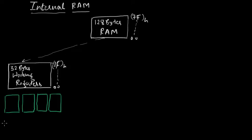This is called Bank 0, this is Bank 1, this is Bank 2, and this is Bank 3. Each bank contains different registers called R0 to R7, which makes 8 different registers.